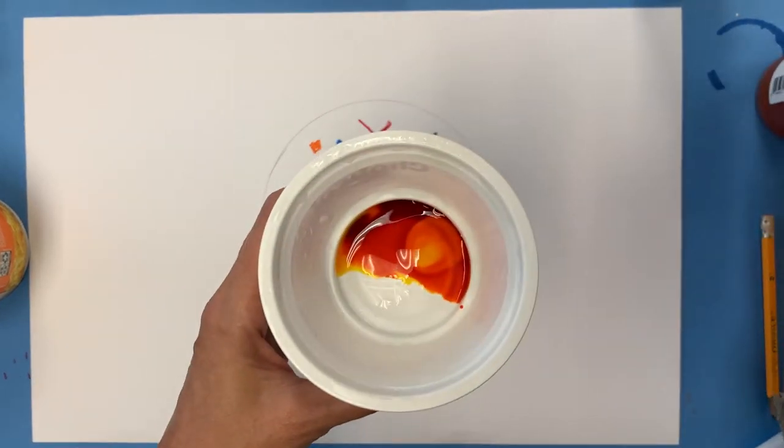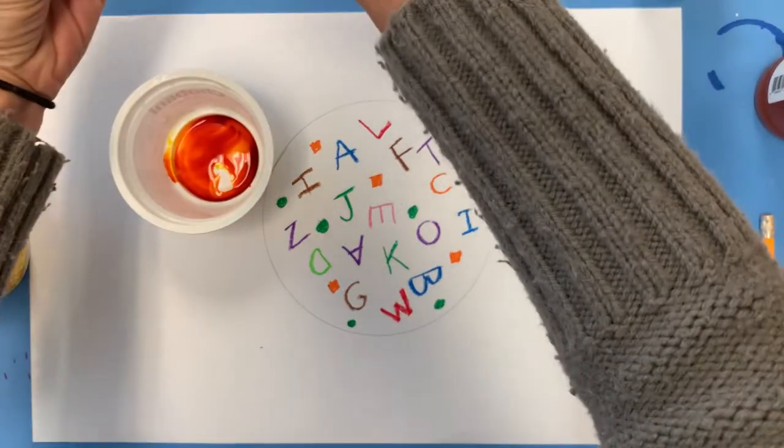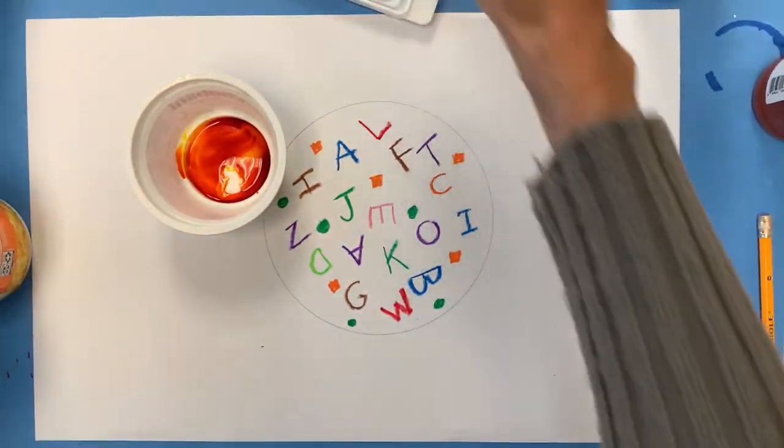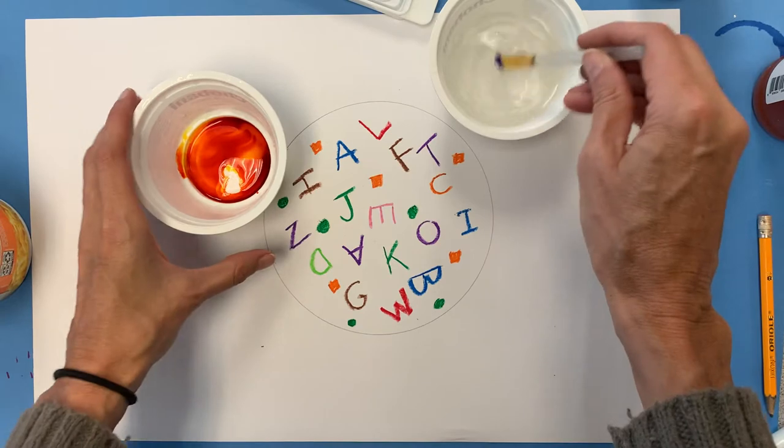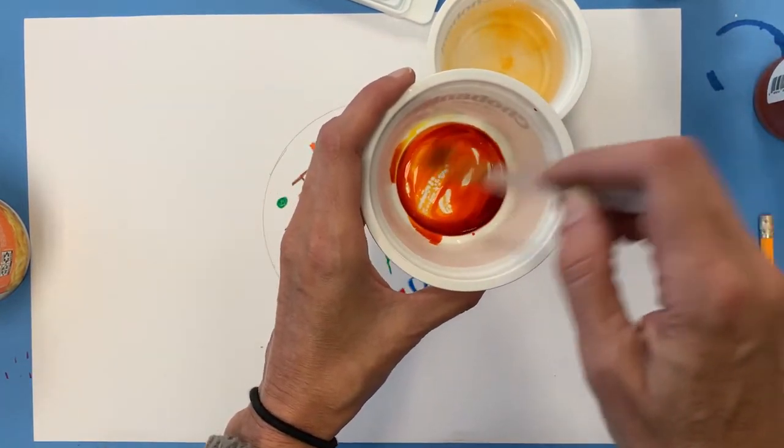That's very orange to make it look sort of like a broth. And then I'll take my brush and stir it up. Might take a little bit of water, add a tiny bit of water to it, and this will be my broth.